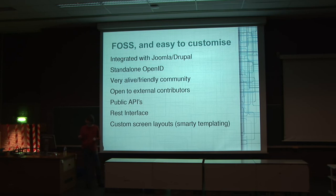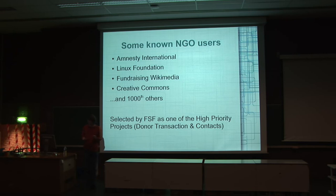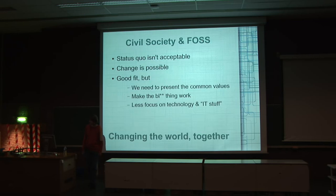To come back to the initial point about civil society and free software: the status quo saying that they don't use open source projects is not acceptable. The good news is that change is possible. However, the change won't happen by itself — we need to work on that, to explain the common values between the NGO world and the free software world. We obviously have to make the software work, because again, software is not an end for themselves, it's a tool. So it has to work and do what they need. And focus less, when we present the software, on technology or IT things they don't care about.